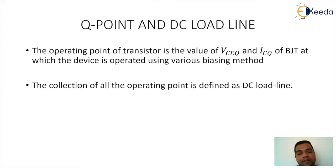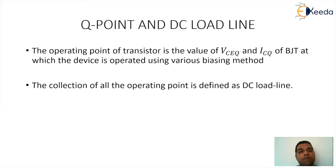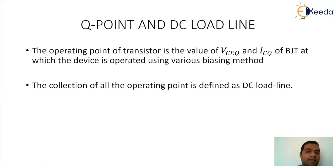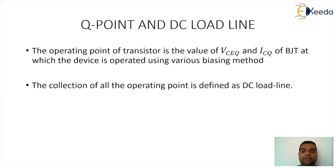The operating point of the transistor is the value of VCE_Q and IC_Q of the BJT at which the device is operated using various biasing methods. The collection of all the operating points is defined as the DC load line.